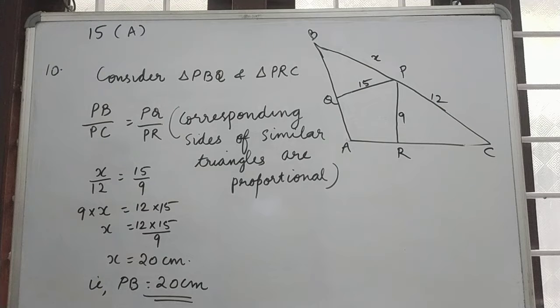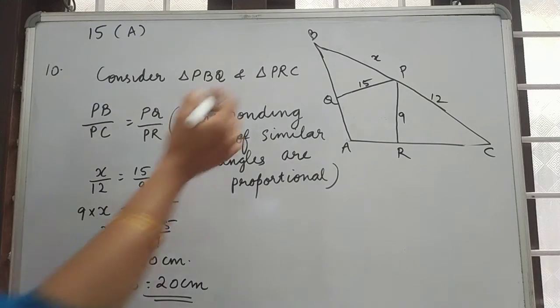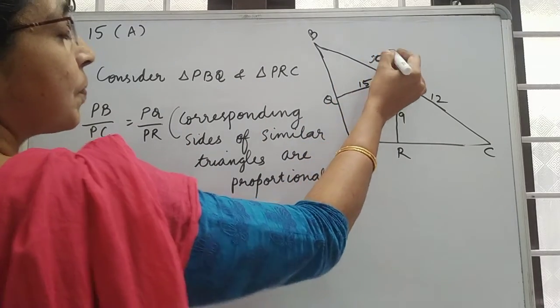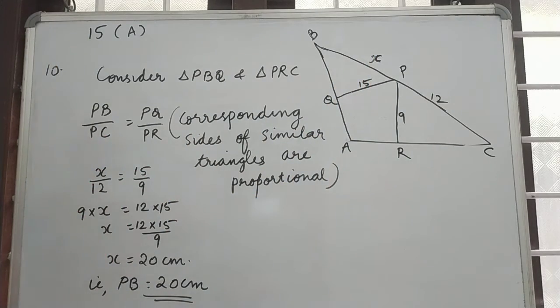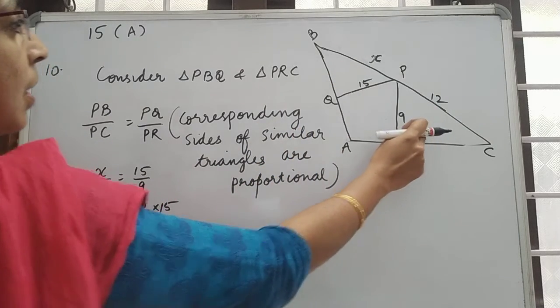We want to find the length of PB. So how can we find PB? We want to find the value of X, that is length BP. For that, consider triangle PBQ and triangle PRC.